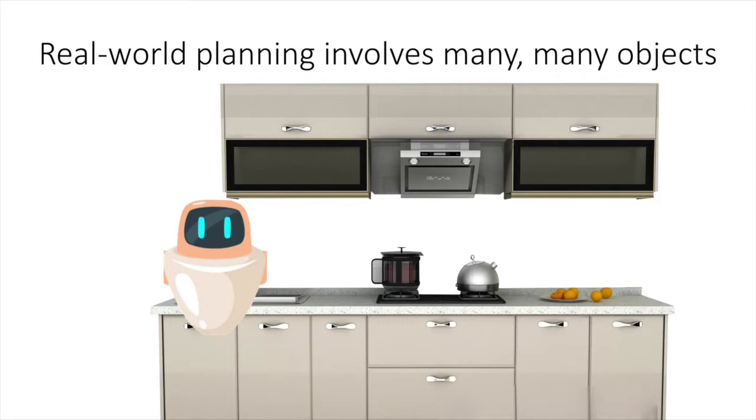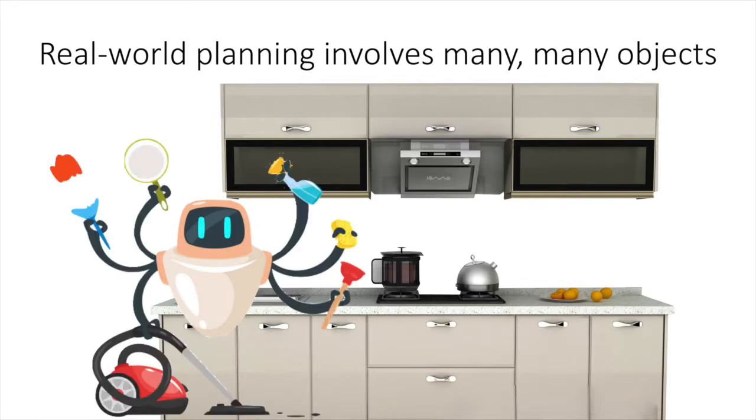For instance, consider a household robot that is responsible for many duties within the home, like cooking, washing dishes, dusting, and many others. Its state representation must contain information about many objects, such as cleaning supplies, food ingredients, appliances, and so on.